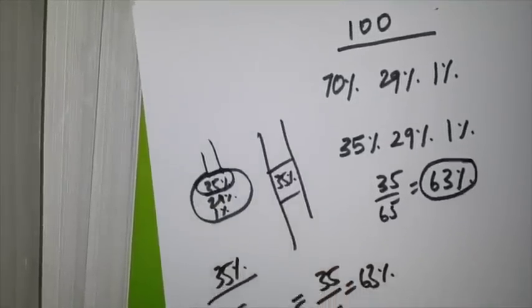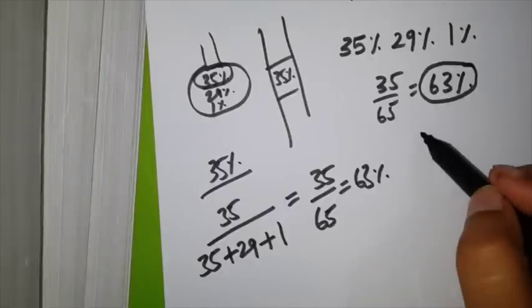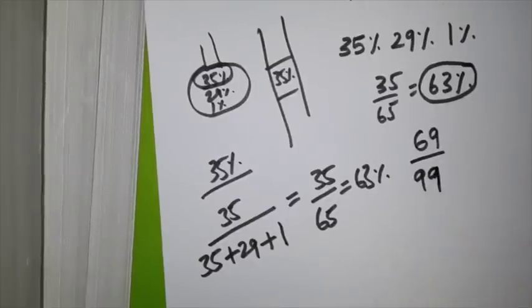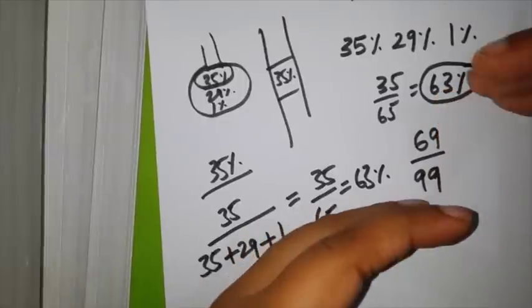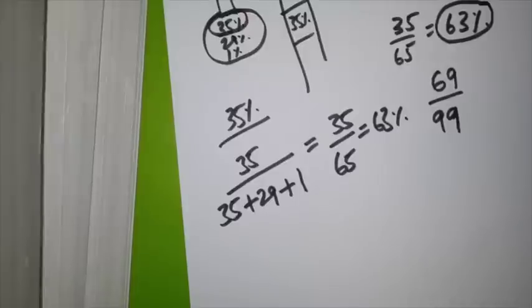So what was expected to be only 35% has reached 63%. In later breaths, as you can calculate, this will again reach 70%, that is it will tend to become 69 by 99. This is how nitrous oxide concentrates itself within the alveoli. This effect is called concentration effect.